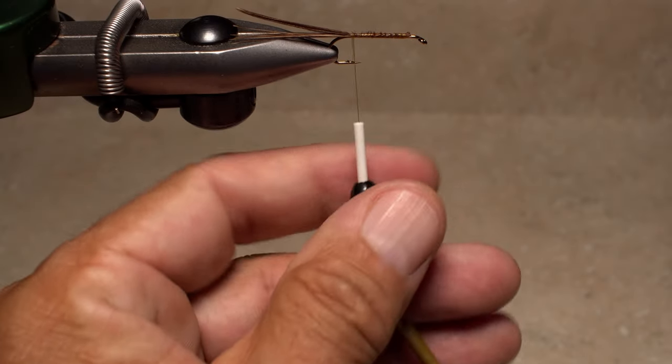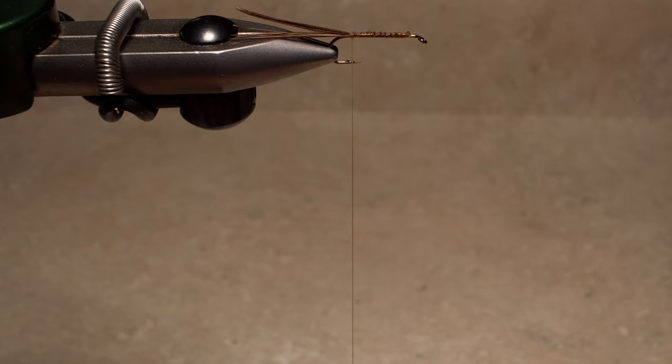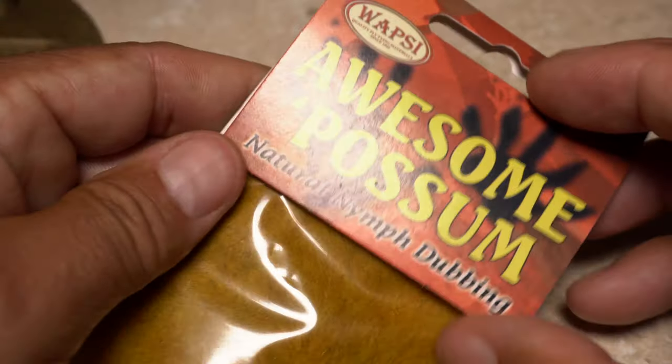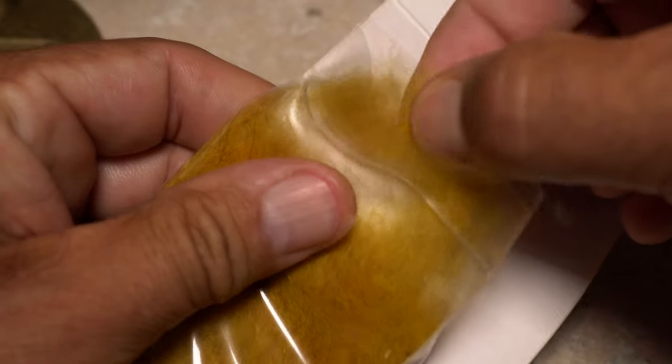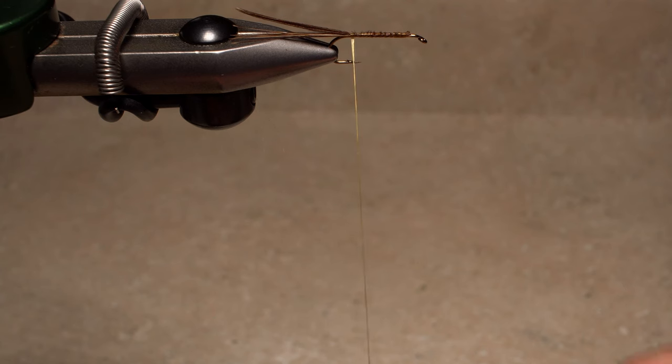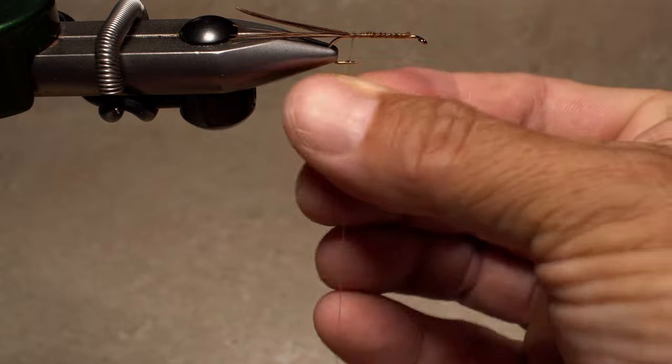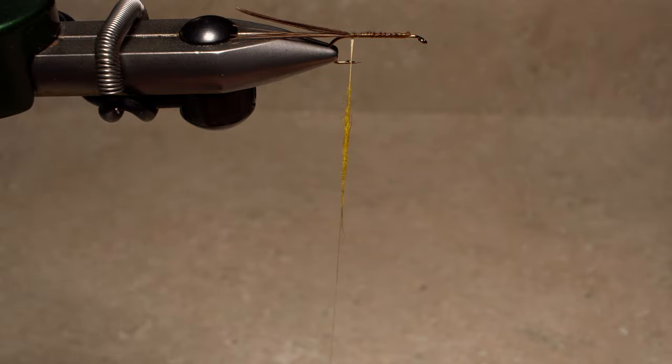Pull down on your bobbin to expose about three inches of thread. I like Australian possum dubbing in a color called Golden Stone for the body of the fly. Build a fairly long tapered dubbing noodle on your tying thread. You want the body to have some volume like the naturals so don't be shy with the dubbing.